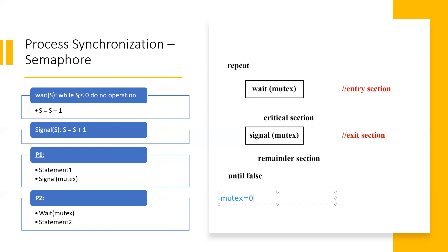While the semaphore variable's value is less than or equal to zero — that means the critical section is already held by some process — no operation is done. Otherwise, if the condition is false and the value is one, the critical section is available, so we decrement S (S minus one) because the critical section is now being used. Here is the wait and this is the mutex, and this is the semaphore.